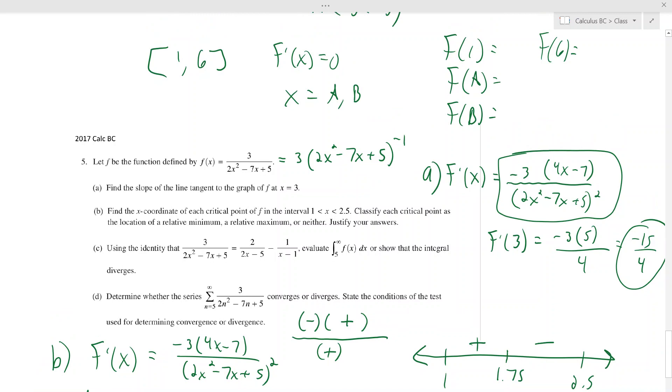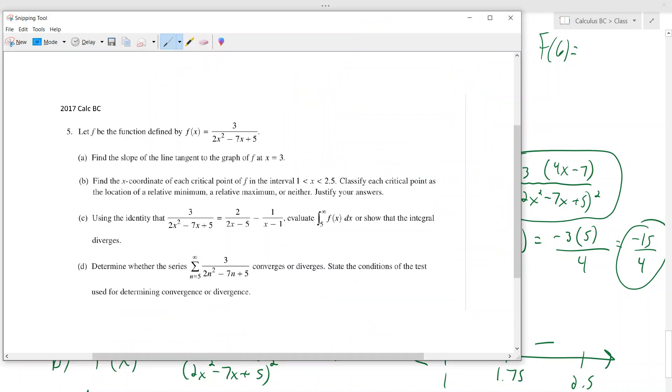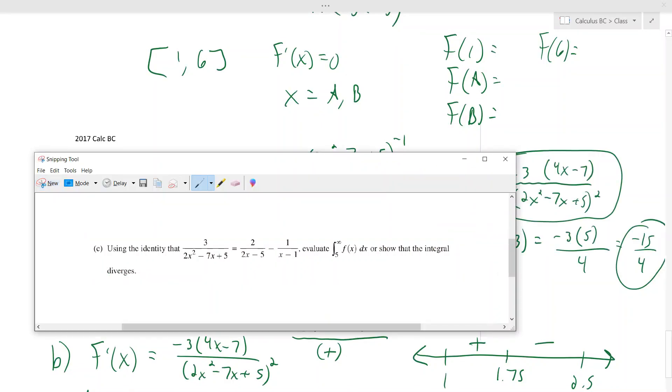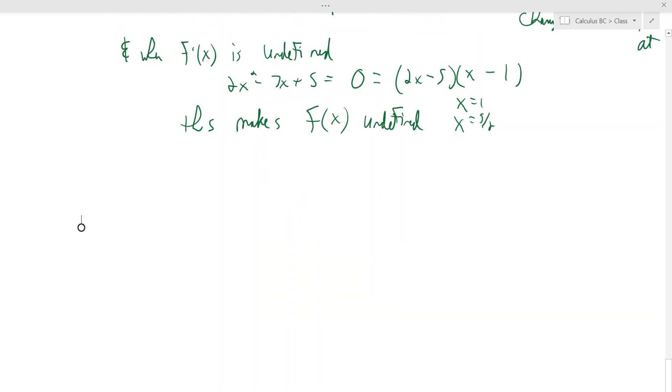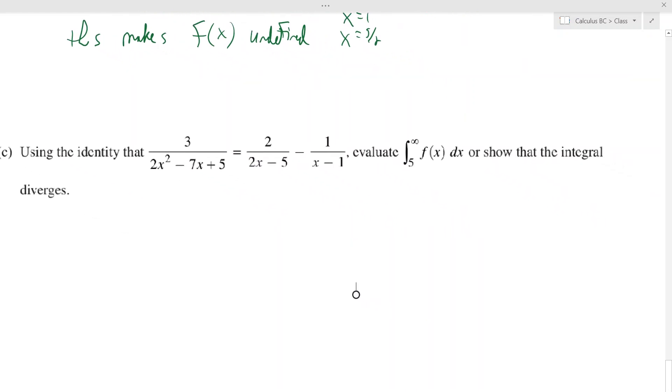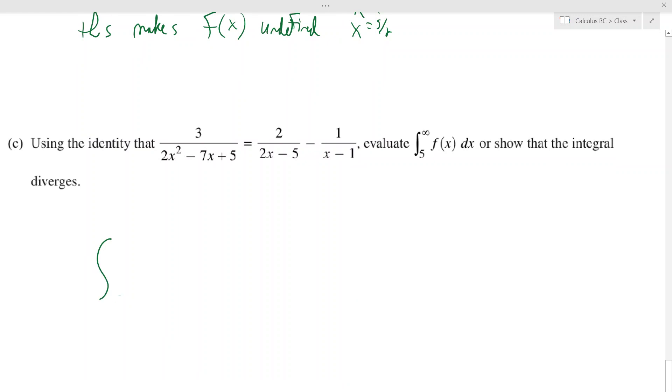Man, they even did the partial fractions for you on this question. How nice is that? Nicer than me in class, right? Yeah, give me this. So let's do this and I'll do the last one and then we'll call it a day here. 45 minutes for a whole week. All right. So basically integrate this from 5 to infinity to show it diverges, but they gave us this thing. So it's 5 to infinity of 2 over 2x minus 5, minus 1 over x minus 1, dx.